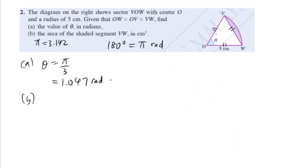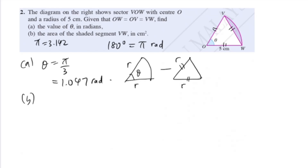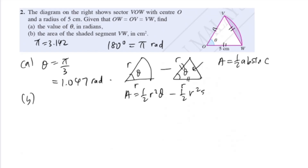Part B: calculate the area of the shaded segment. I like to use the formula for area of a segment. For a sector, the area of the segment equals area of sector minus area of triangle. Area of sector is half R squared theta, and area of triangle uses half AB sine C, which becomes half R squared sine theta. So we can write this as half R squared times (theta minus sine theta).